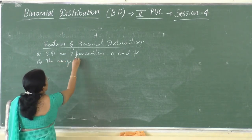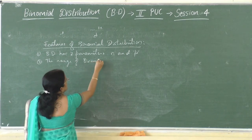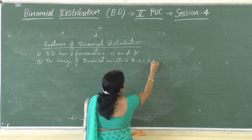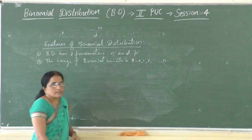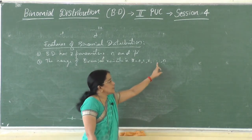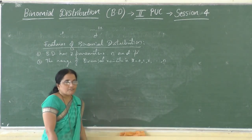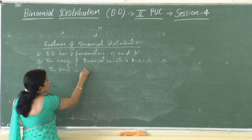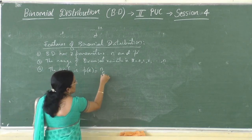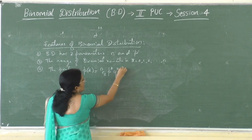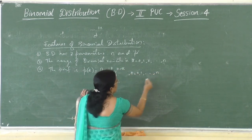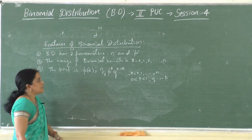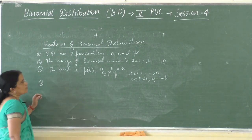Feature 2: the range of the binomial variate is x = 0, 1, 2, 3, ..., n — it takes n+1 values. Feature 3: the probability mass function is p(x) = nCx · p^x · q^(n−x), x = 0, 1, 2, ..., n, 0 < p < 1, q = 1 − p.